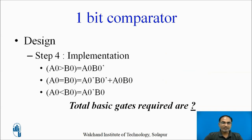The last step is the implementation step. We need to draw a logic diagram using gates. Let us calculate the total number of basic gates required to implement all three functions. For a0 greater than b0, you require one AND gate and one inverter. For a0 equals b0, you have two AND terms, one OR term, and two inverters for a0 and b0. For a0 less than b0, again one AND gate and one inverter.